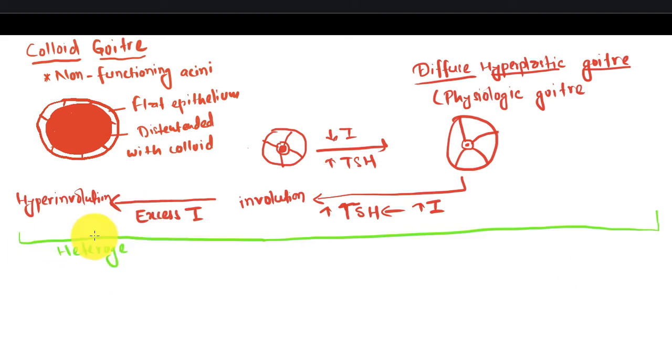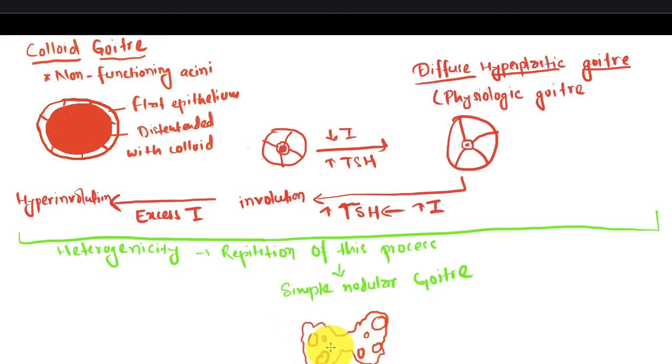The repetition of this process results in heterogeneity. The repetition from diffuse hyperplastic goiter to colloid goiter causes simple nodular goiter. We have here the diagrammatic representation with small and big nodules. There will be hemorrhage in the follicles causing central necrosis. This central necrosis will coalesce to form a non-functioning nodule.